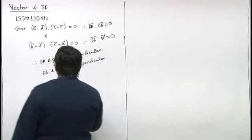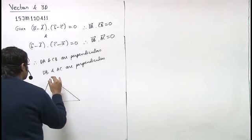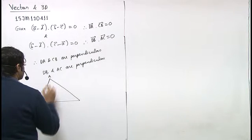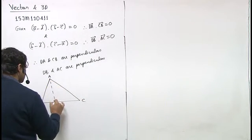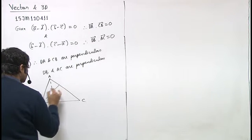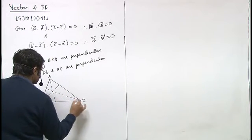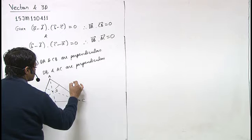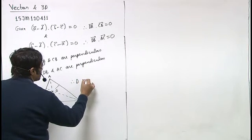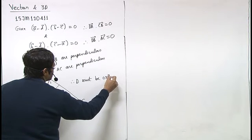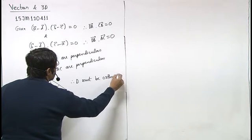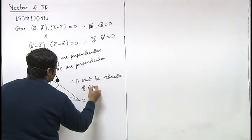That means D should be the orthocenter. Therefore, D must be the orthocenter of triangle ABC.